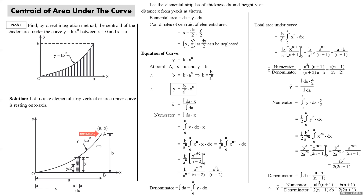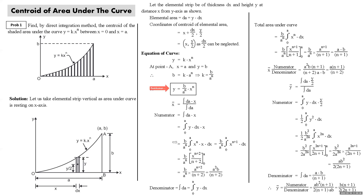At point A, coordinates are (a, b), so substituting x = a and y = b gives b = k·a^n, hence k = b / a^n. Substituting k back gives the modified equation of the curve. For x̄, using integration: numerator is the integral of dA · x, where dA = y dx. Substituting the modified y value: y = (b / a^n)·x^n, so the numerator becomes the integral of (b / a^n)·x^(n+1) dx.